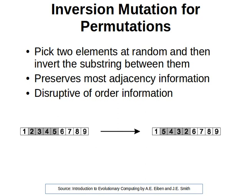Let's have a look at a simple example. If we have the same array that we used before, let's say that we randomly choose two points and the start cut point is here and the end point is here. Then what we do is we just reverse that subarray. So it was 2, 3, 5, 4 — it becomes 4, 3, 2, 5.